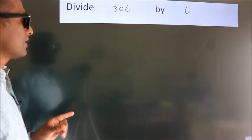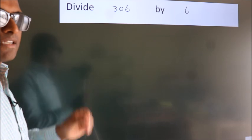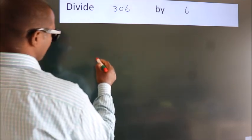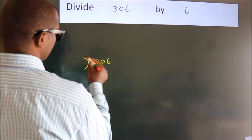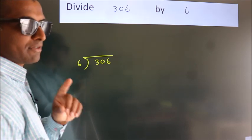Divide 306 by 6. To do this division we should frame it in this way: 306 here, 6 here. This is your step 1.